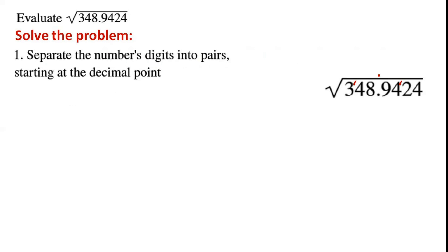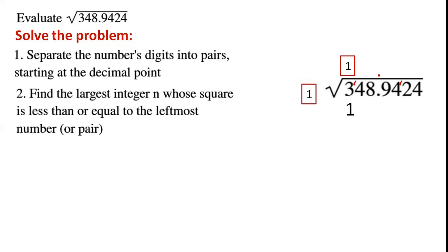We write a decimal point for the quotient directly above the decimal point of the number. Next, we find the largest integer n whose square is less than or equal to the leftmost number or pair. We know that 1 squared is 1 and 2 squared is 4. So we write 1 as the divisor and 1 as the quotient. We subtract the product of the divisor and the quotient, which is 1. So we write 1 below 3.